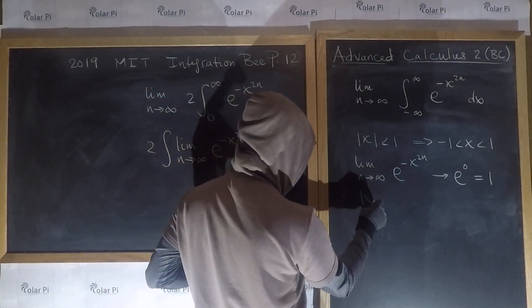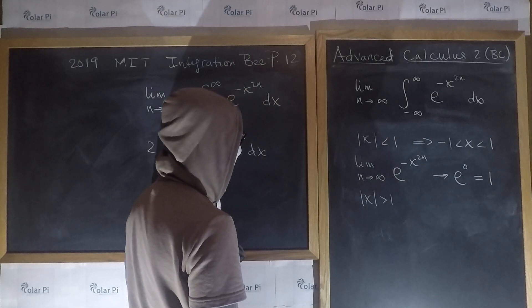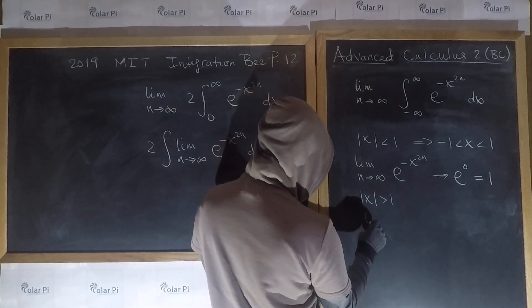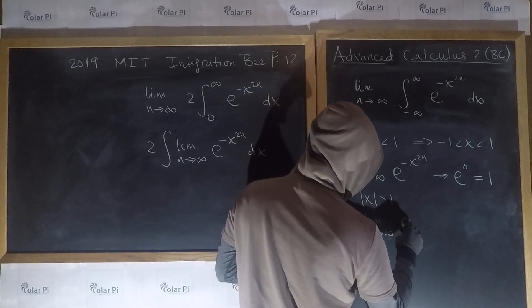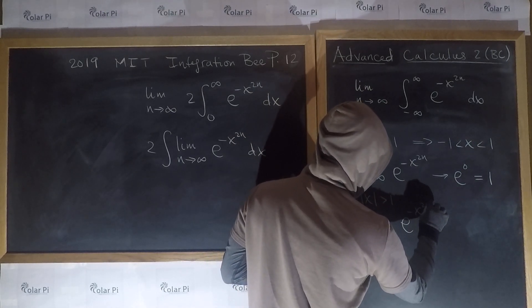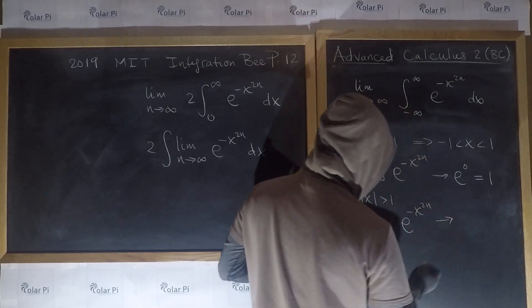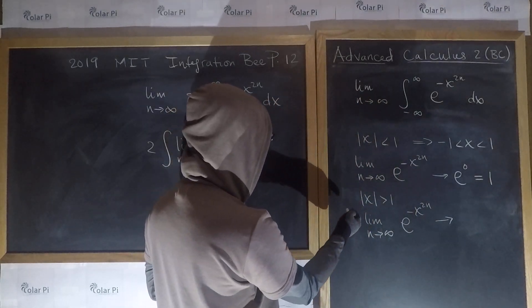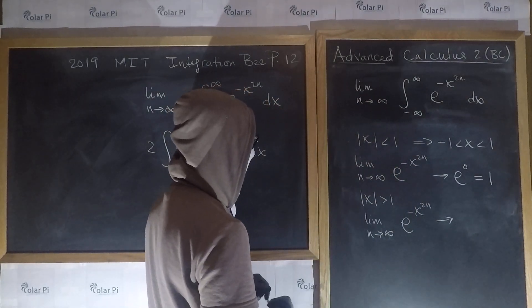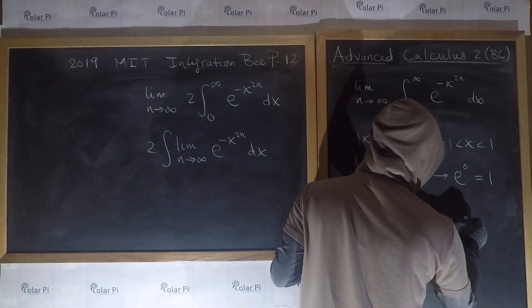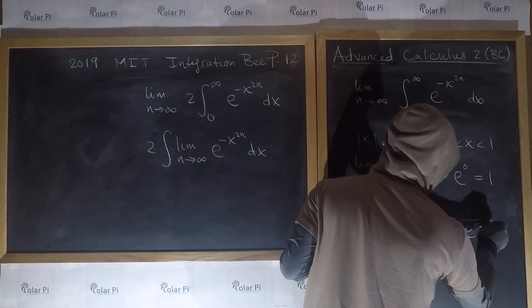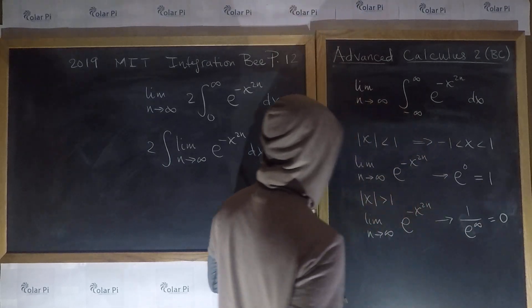what if the absolute value of x is bigger than 1? Then, for such x's, the limit as n goes to infinity of e to the minus x to the 2n goes to, for x's with absolute value bigger than 1, it goes to e to the negative infinity, which is 1 over e to the infinity, which is 0.